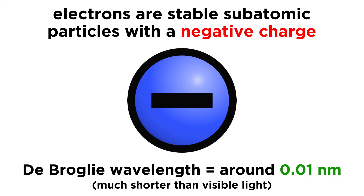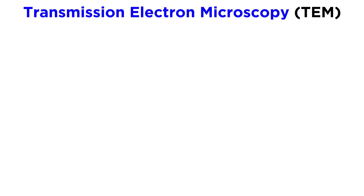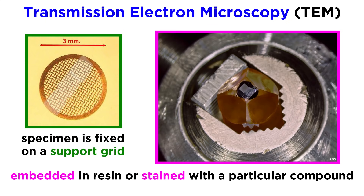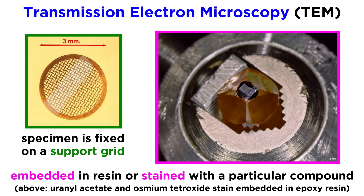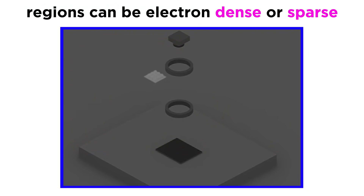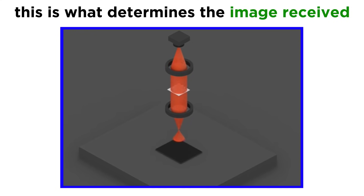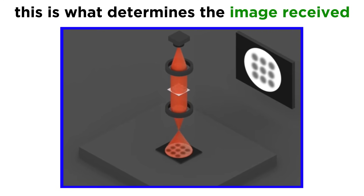This shorter wavelength allows for a higher level of detail and resolution in imaging. One type of electron microscopy is called transmission electron microscopy, or TEM. For TEM, specimens are fixed on a support grid and either embedded in resin or stained with a material like uranyl acetate or compounds of heavy metals like osmium tetroxide. Certain structures within the specimen will take up more of the stain than other parts, and those sections are called electron-dense regions. When electrons pass through electron-dense regions, they lose more energy compared to when they pass through sparser regions. This phenomenon is used by TEM to visualize the specimen at high levels of resolution and magnification.